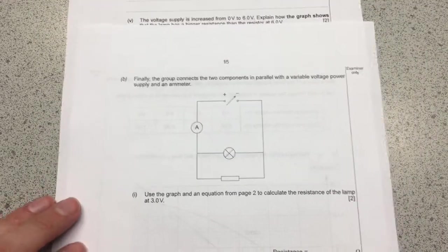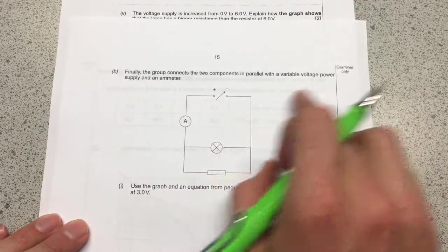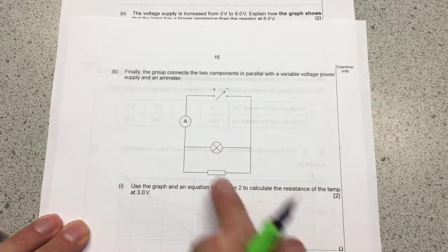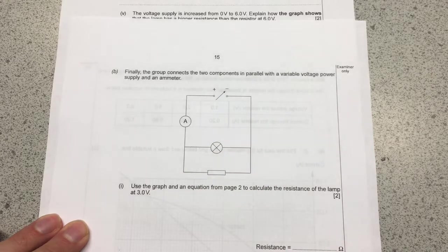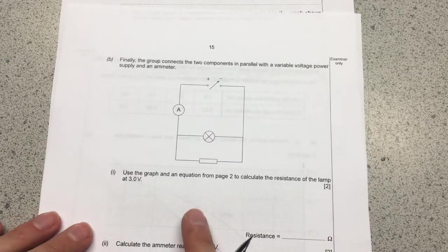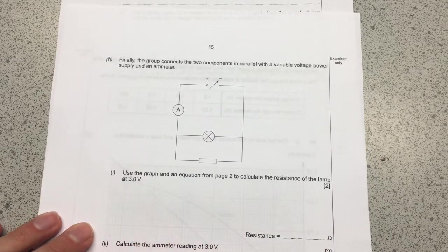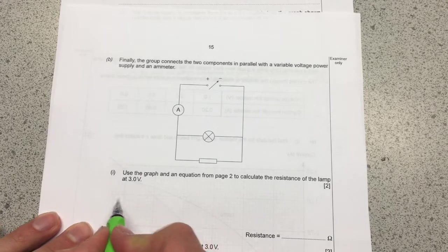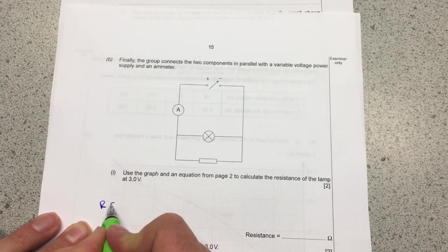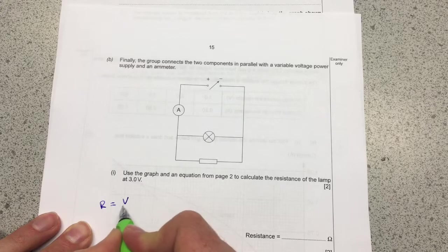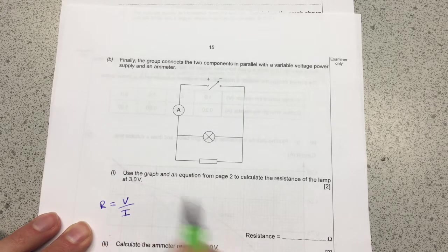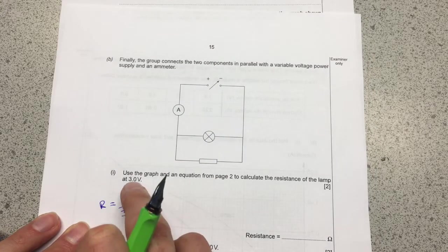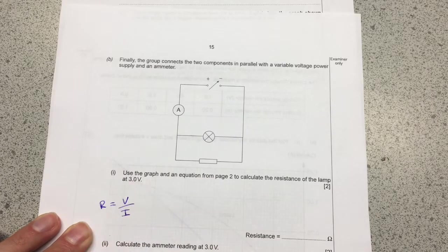So we flip over. They do a slightly different bit of experiment here. They've drawn a diagram for this so you can see that now these two components are connected in parallel with each other and they want us to use the graph and an equation from page two. So that's going to be resistance is equal to voltage divided by current.